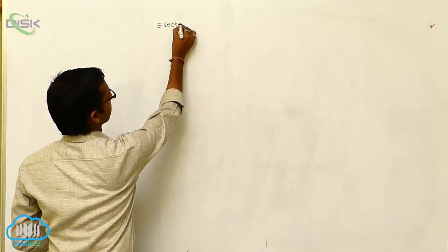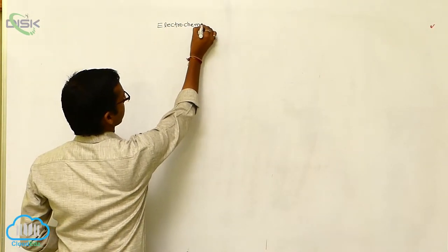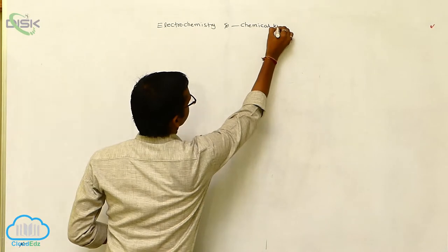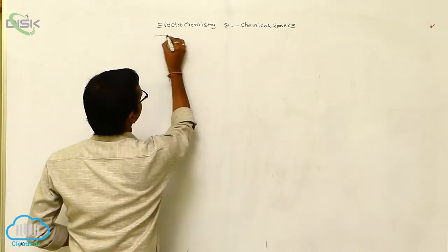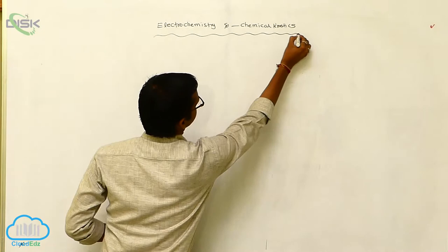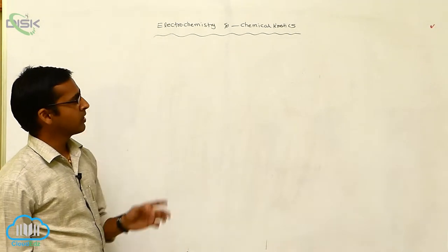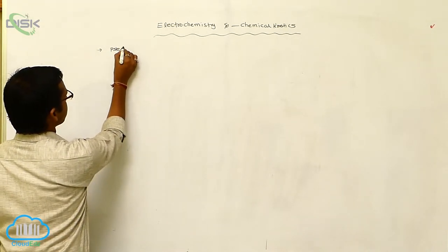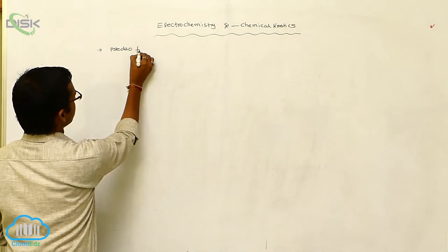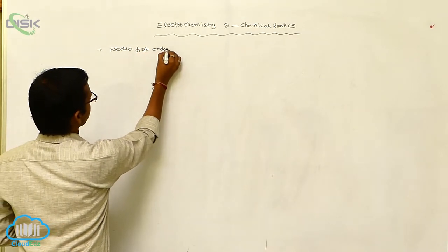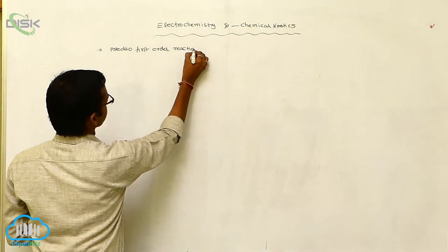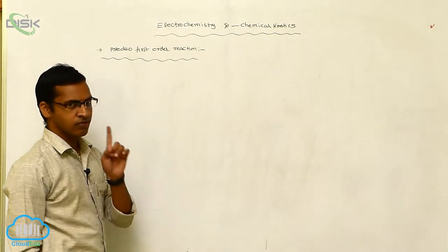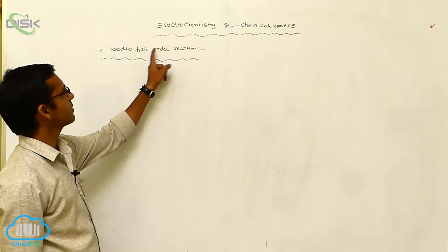In Electrochemistry and Chemical Kinetics, we already discussed first order reaction and second order reaction — the derivations of mathematical equations are completed. First order reaction means the rate of reaction depends on one concentration term.